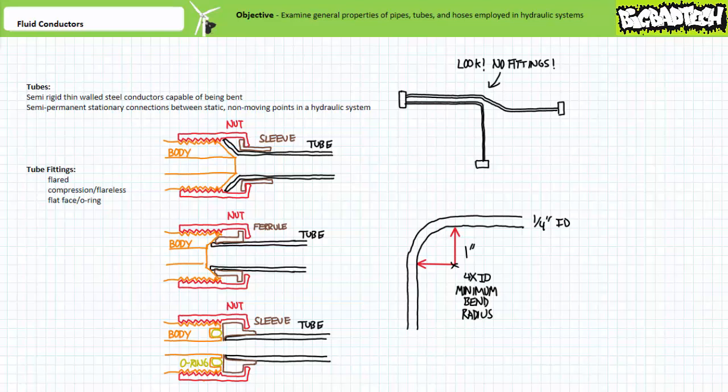In summary, tubes are weaker than pipes, however, are slightly flexible and can be bent to accommodate for minor deviations in course. Similar to pipes, tubes are meant for semi-permanent stationary connections between static, non-moving points in a hydraulic system.